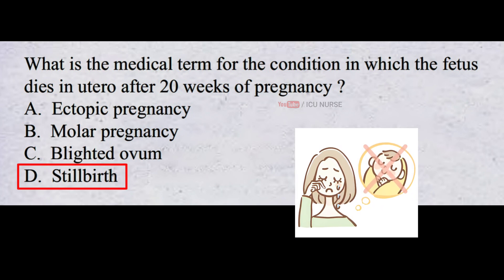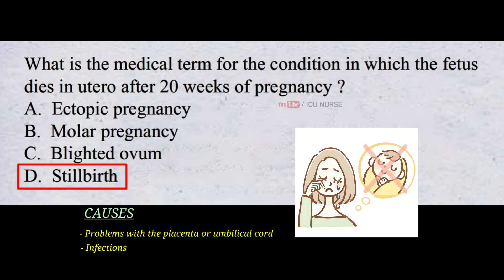Stillbirth is the term used to describe the loss of a baby before or during delivery after 20 weeks of pregnancy, where the baby shows no signs of life. It is a very sad and difficult experience for families and can be caused by a variety of factors, including problems with the placenta or umbilical cord, infections, or complications during pregnancy.